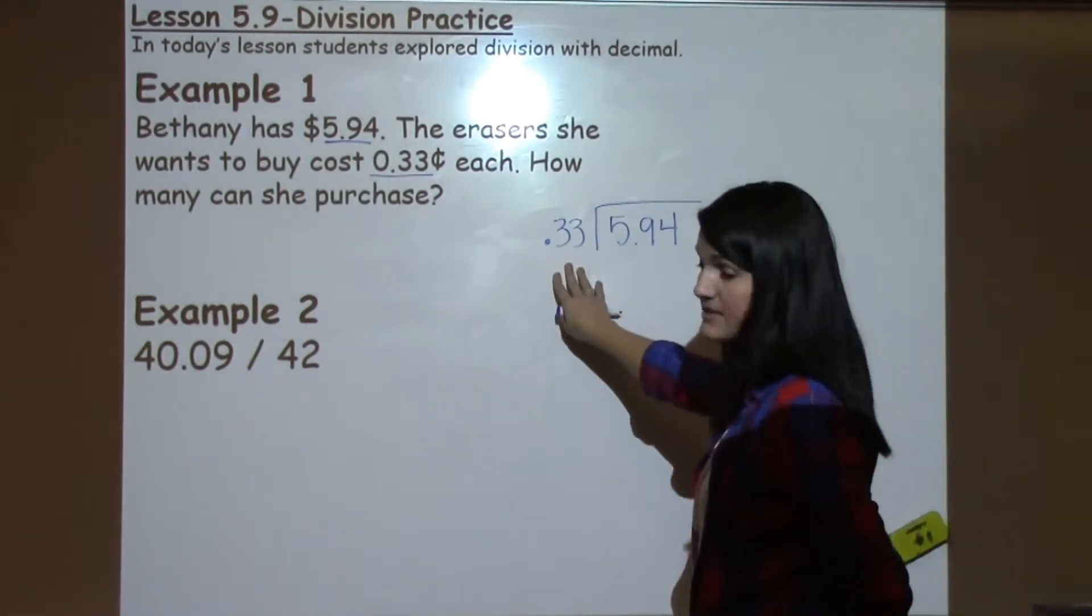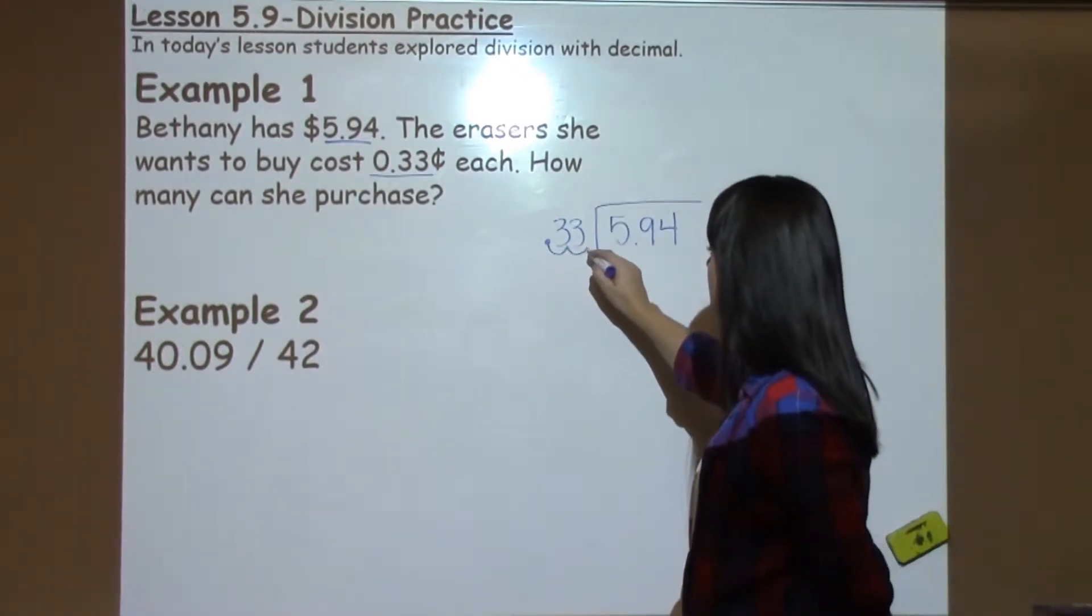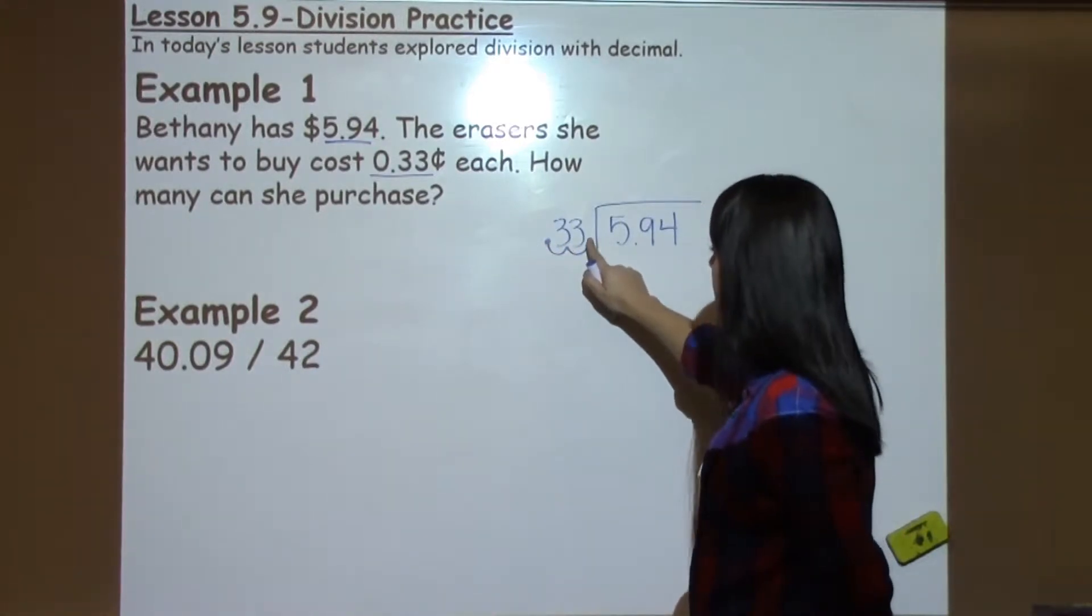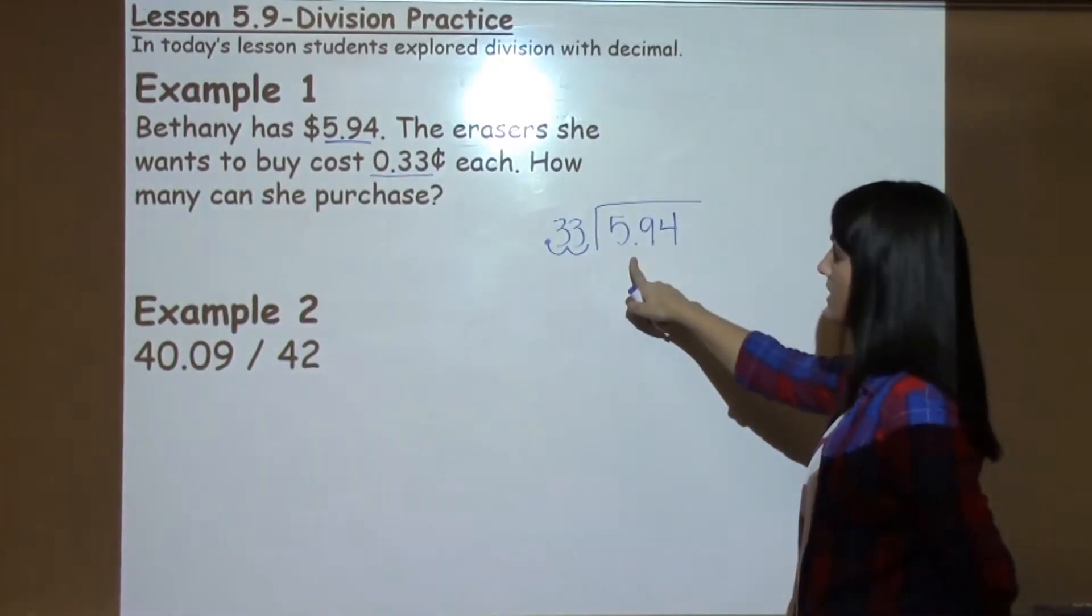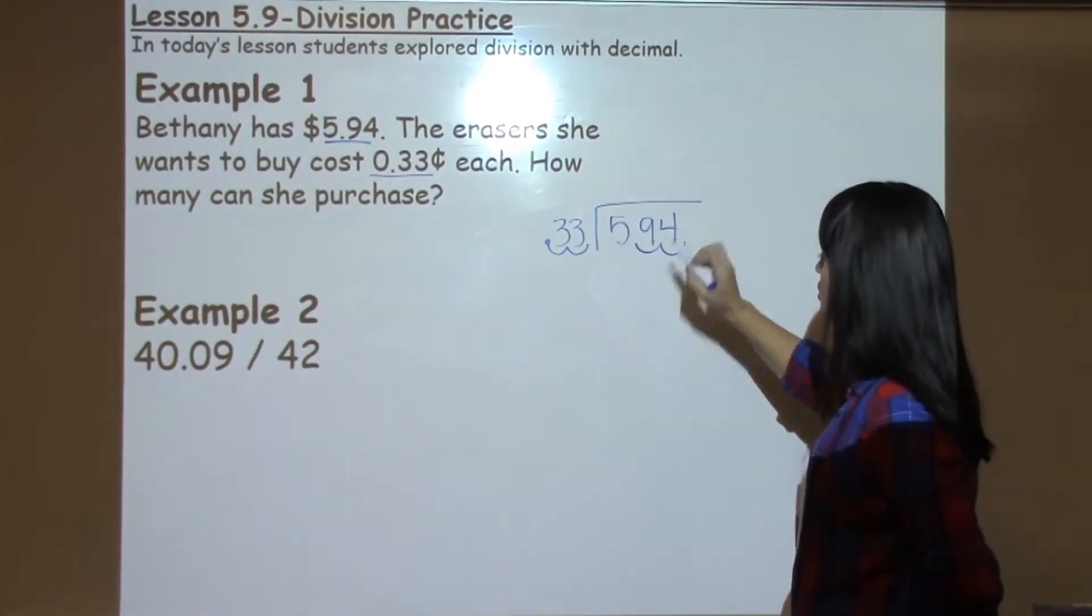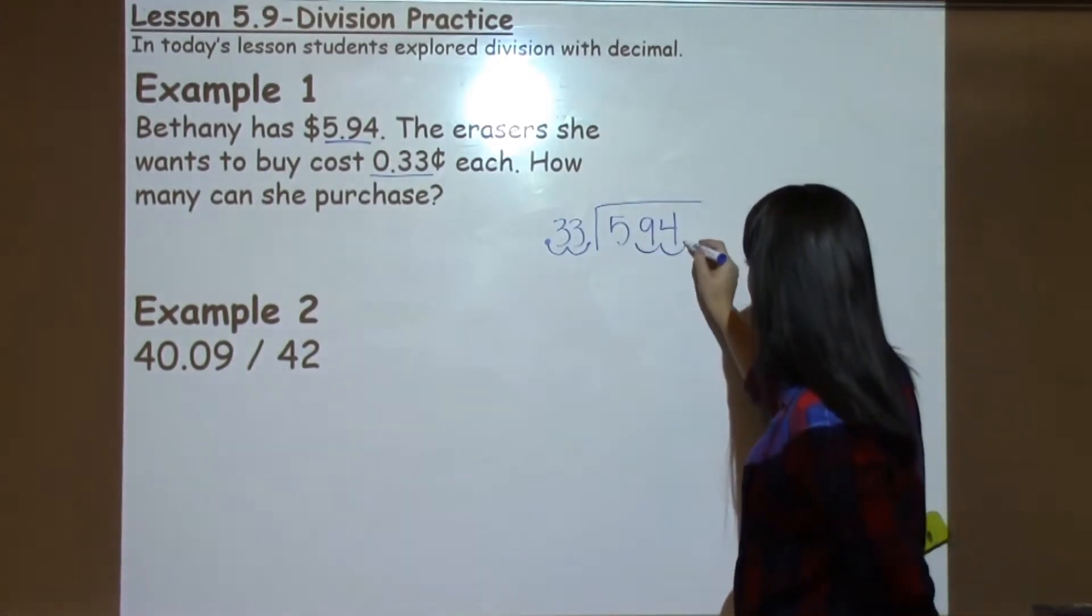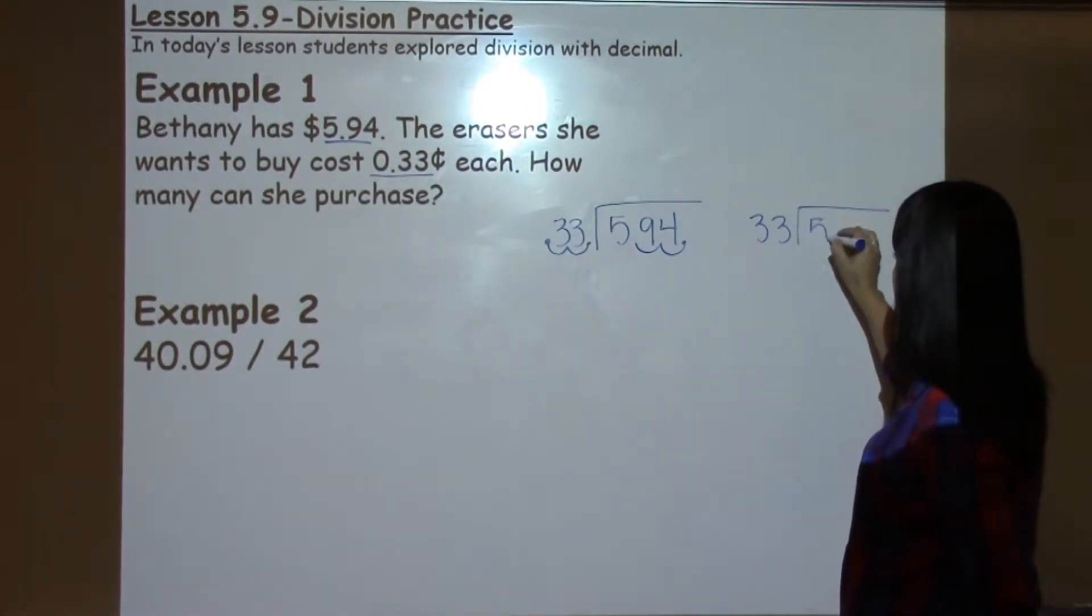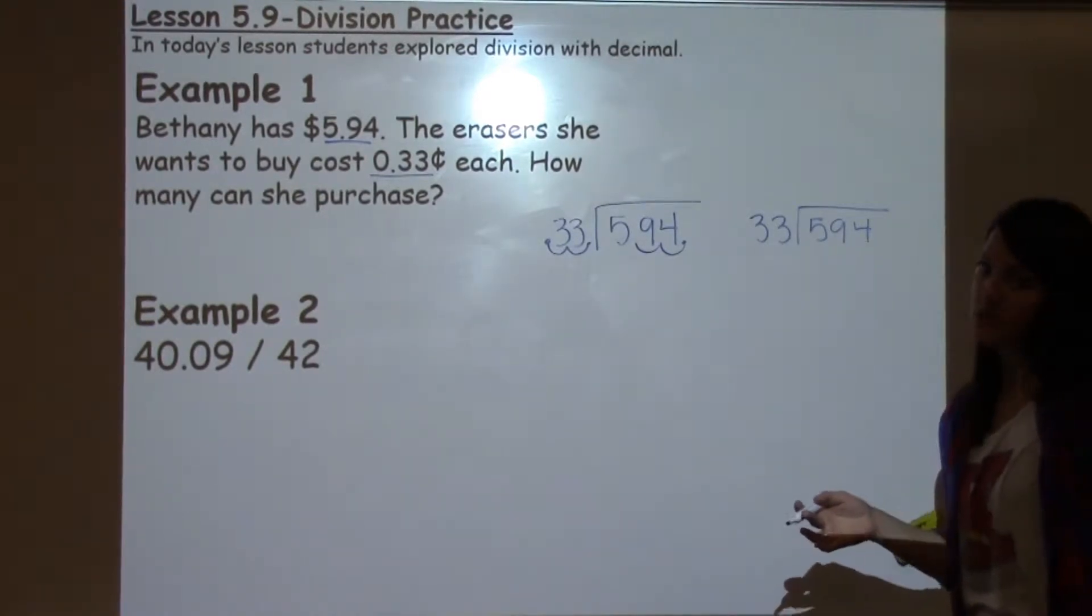Remember, if I have a decimal number on the outside of my division bar, I have to move it to the end. In this example, I need to move that decimal two places to get it to the end of the $0.33. Anything I do to the outside number, I must do to the inside number. So I also have to move this number two places as well. We encourage students to rewrite the problem so that it's not as confusing to look at with those loops. This just looks like $594 divided by $33.